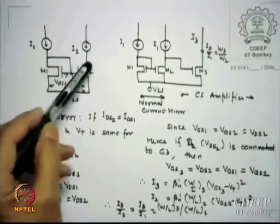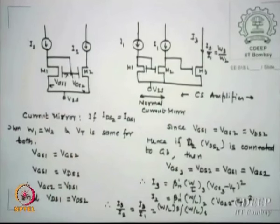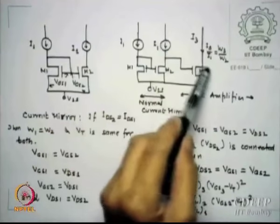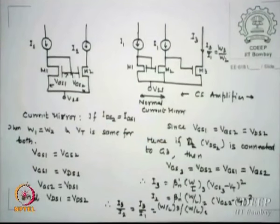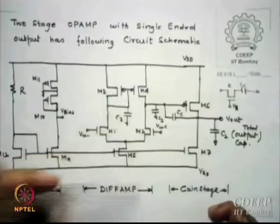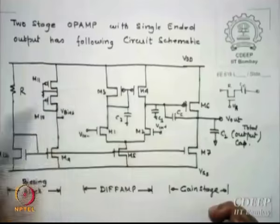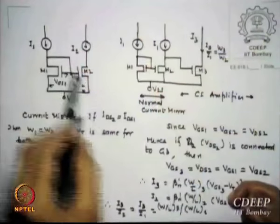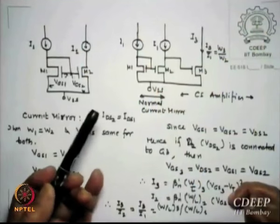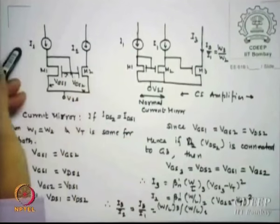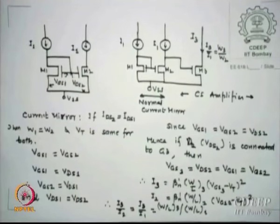Looking at this structure with M6, this is the mirror driven from the output to the input of that common source amplifier. If the currents are the same, VGS is the same — there is no other way VDS could be different. IDS = (β/2)·VDS², so if currents are same and sizes are same, it cannot be different.